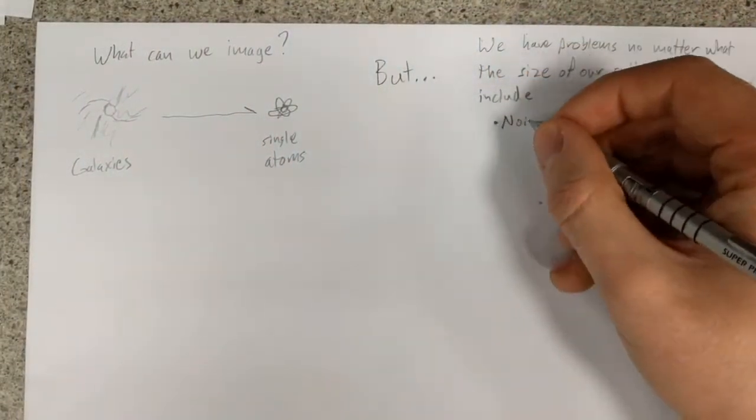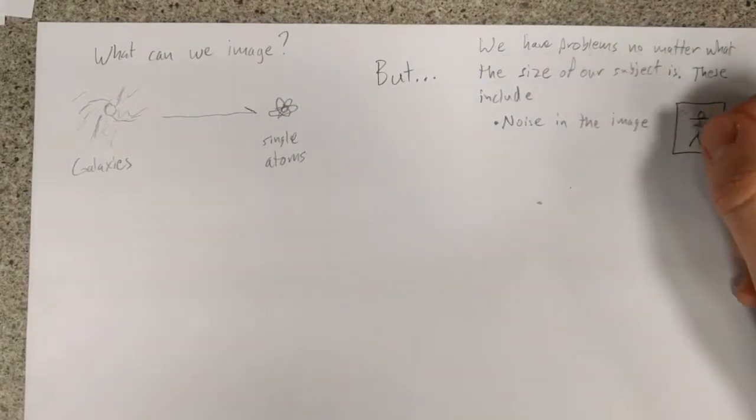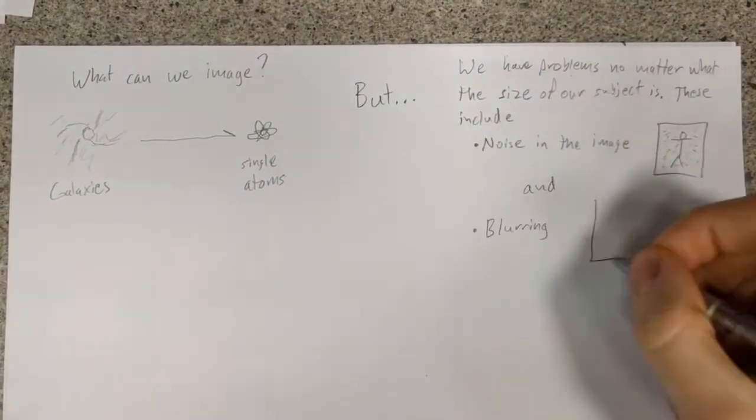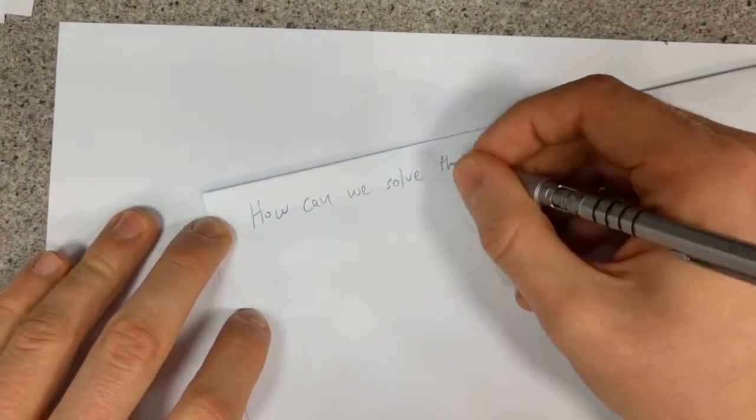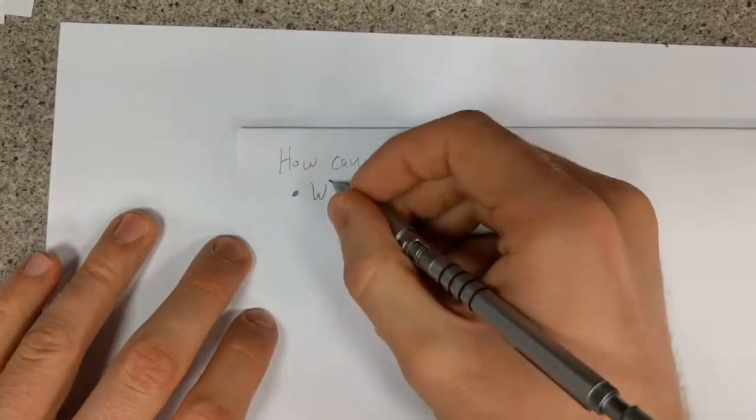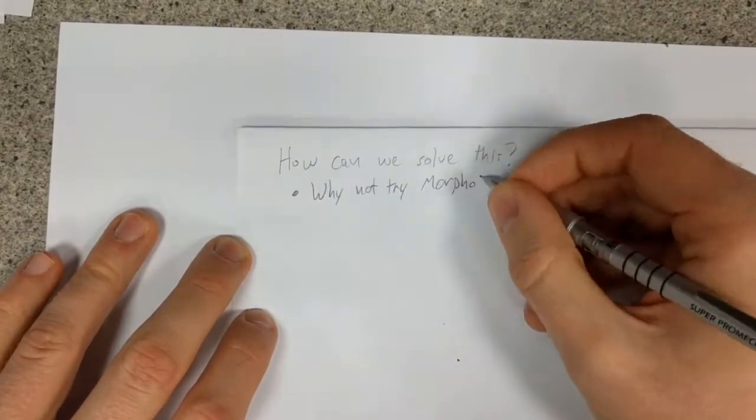Most notably, this includes the presence of noise within an image, as well as image blurring due to the lens being out of focus. How can we go about resolving these image issues? One possible avenue is through using morphological operators.